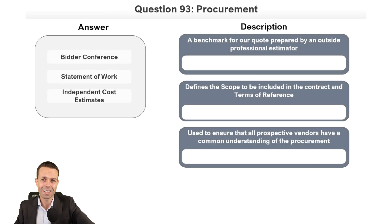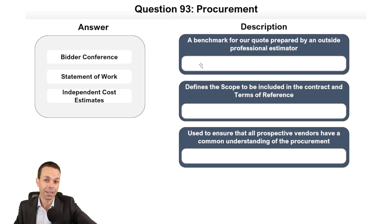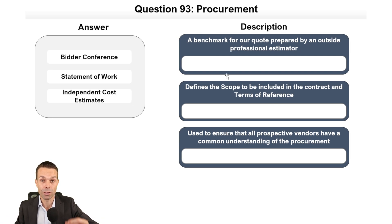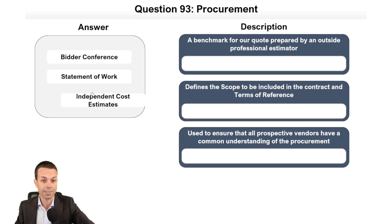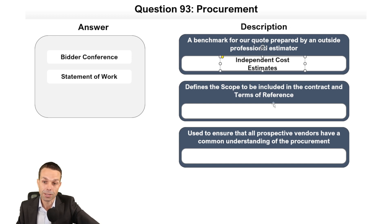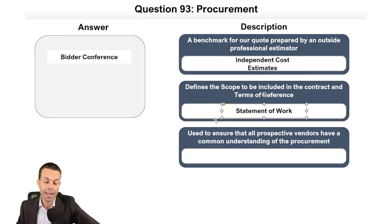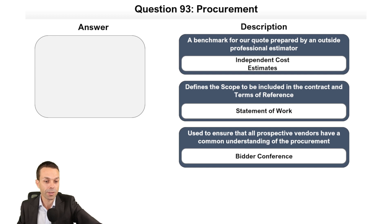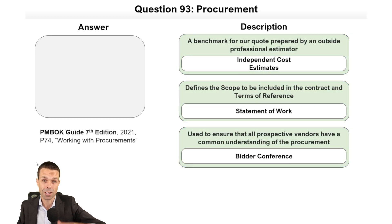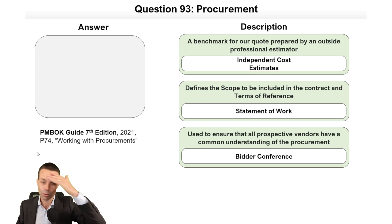Now procurement: a benchmark quote prepared by an outside professional estimator, or information from commercial databases or consultancy firms like KPMG or McKinsey, all count as independent cost estimates. Defining the scope and terms of reference for the contract is the statement of work. To ensure all prospective vendors have a common understanding, we hold a bidder conference so no one gets preferential treatment. That's verified on page 74.